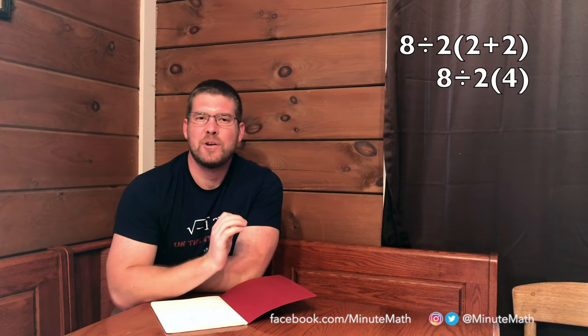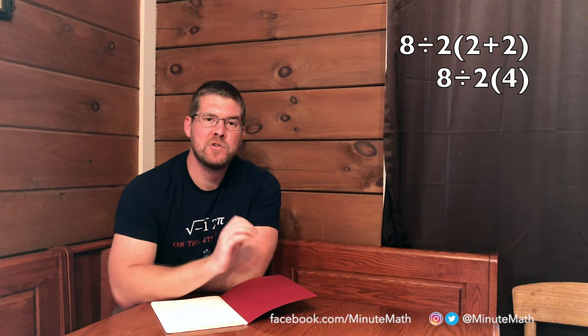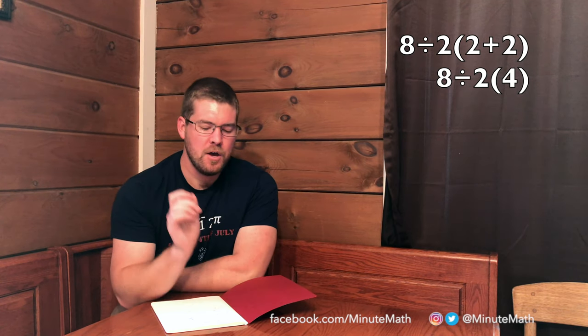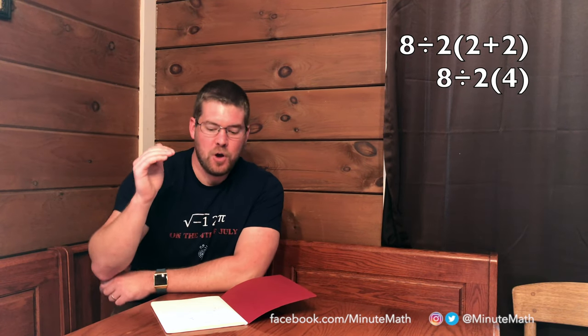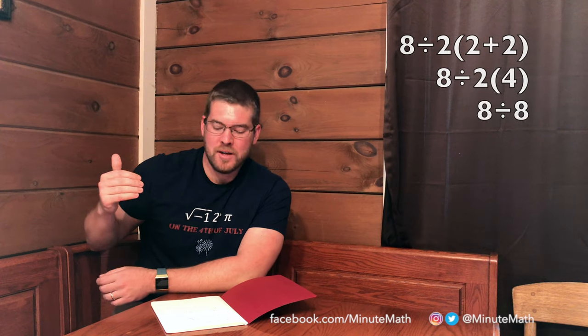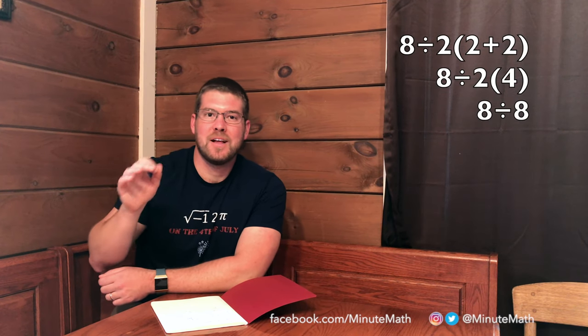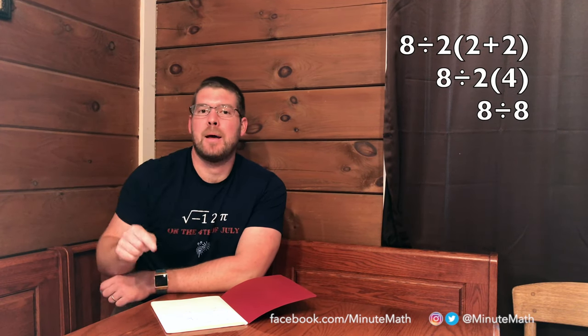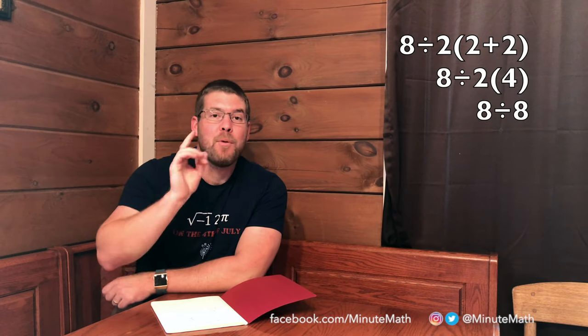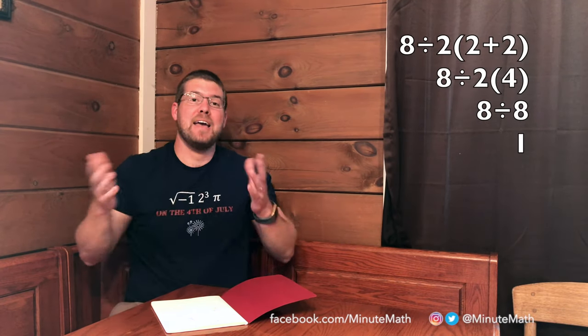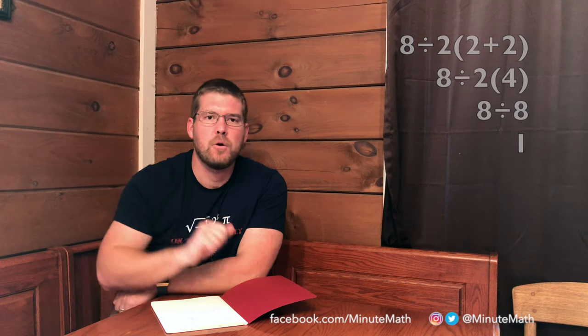Remember what I said earlier. That multiplication and division are essentially the same thing. So, here, instead of going where people are going wrong, where they take two times four, they get the eight. And then eight divided by eight. But then eight divided by eight is one. And they're saying, hey, look, that's the answer. Wrong.